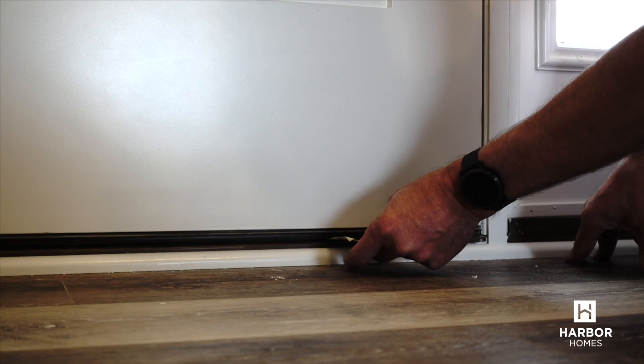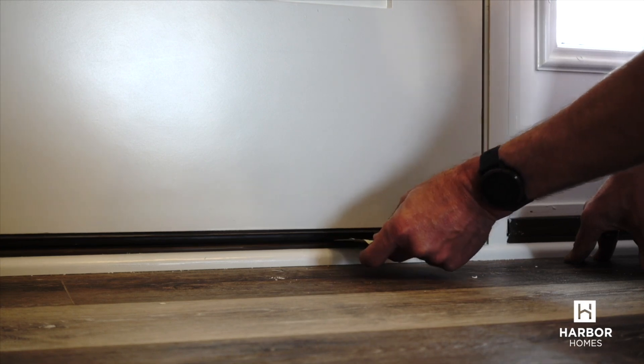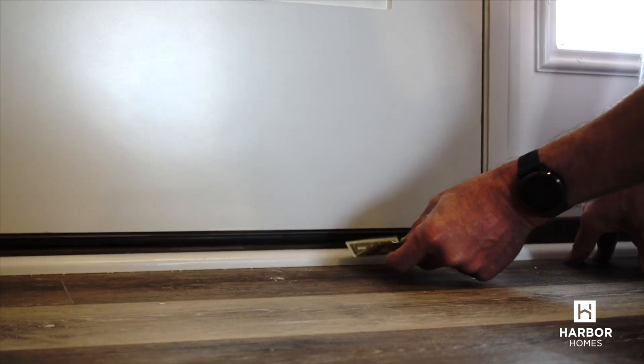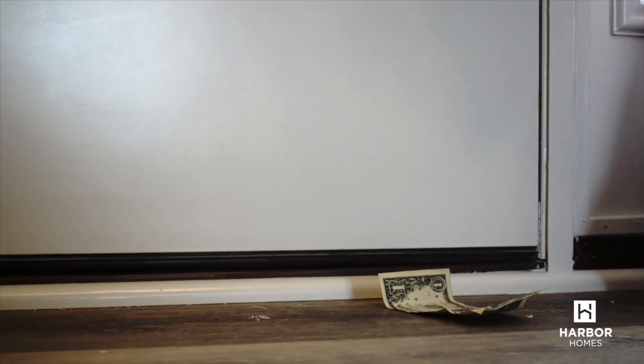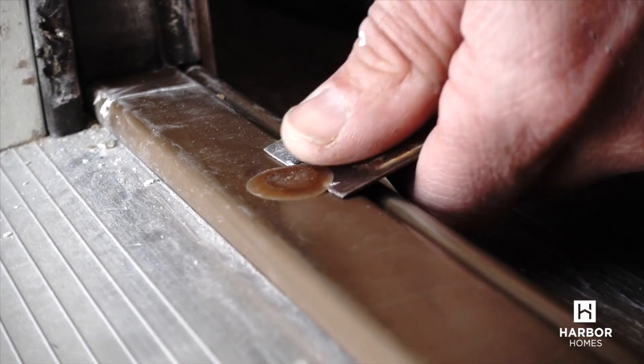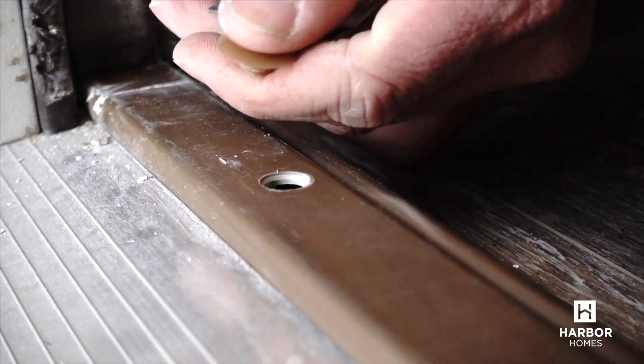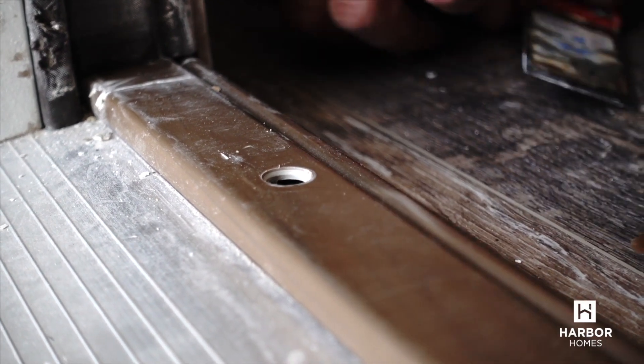A good test is if you can pull a dollar under the door. A threshold at the proper height should allow a dollar to be pulled through with just a little bit of tension. You can adjust the height of the threshold by turning the screws.